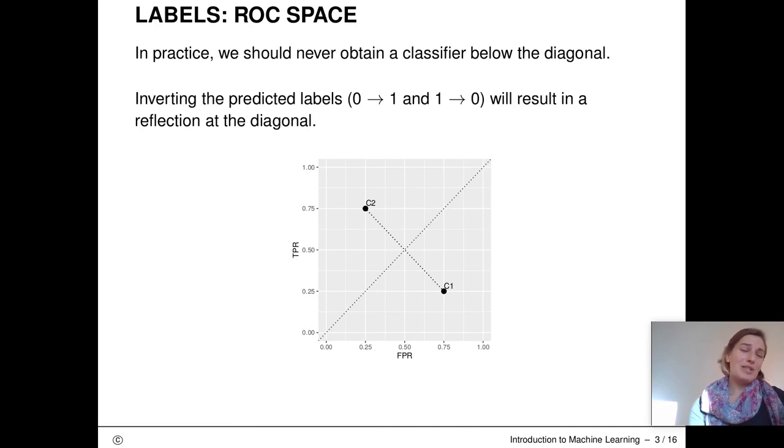If we somehow manage to get a classifier which lies below the diagonal, then we did something deeply wrong. In practice, we should never see something like that. It is very likely that if we get a classifier that lies somewhere in the right bottom corner, then we made some mistake. Like, for example, we might have accidentally switched labels. Because if we invert the predicted labels, so if we say positives are now negative and vice versa, then the point in the ROC space will be mirrored where our original classifier lies.